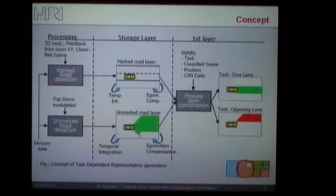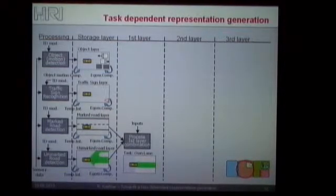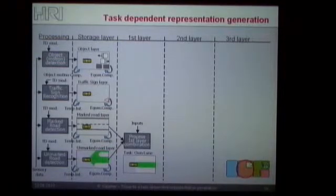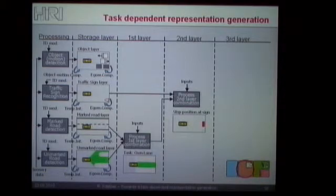So if you want to extract your ego lane or an opposing lane based on the current scene context and the information from your processing layers, this is a simple combination of the different storage layers. If you extend this to additional processing algorithms in a similar fashion, you are not only able to combine similar algorithms, but also able to combine other algorithms such as the traffic sign layer. Therefore, if you want to find the current position where you would have to stop within your environment — given your unmarked road detection, your marked road layer, and some kind of traffic sign layer — this is again just a simple combination of the layers, and then you get the output within your current environment.